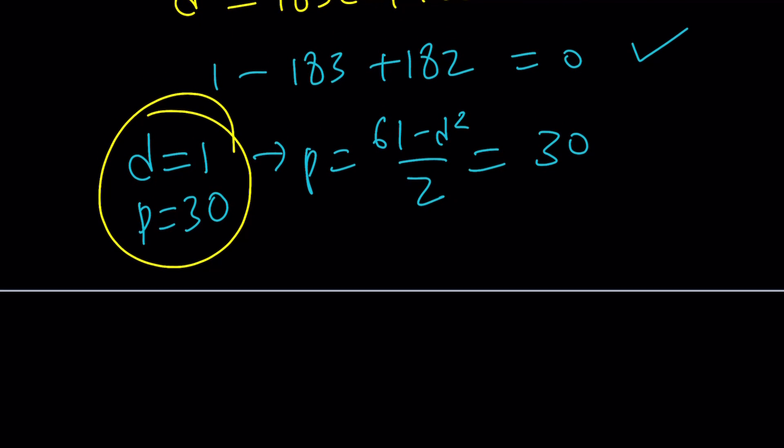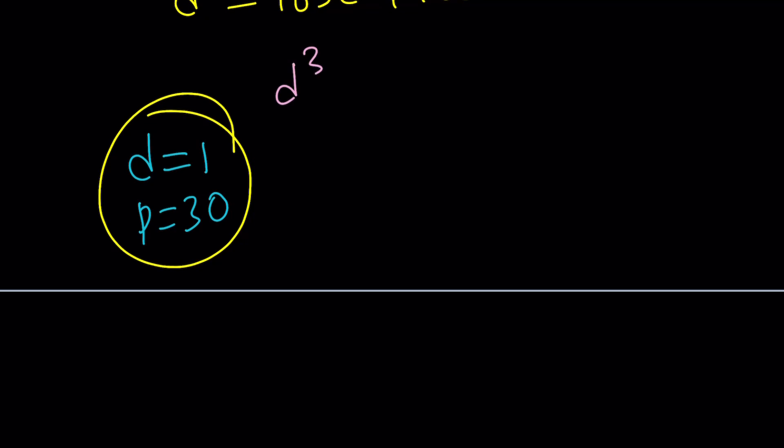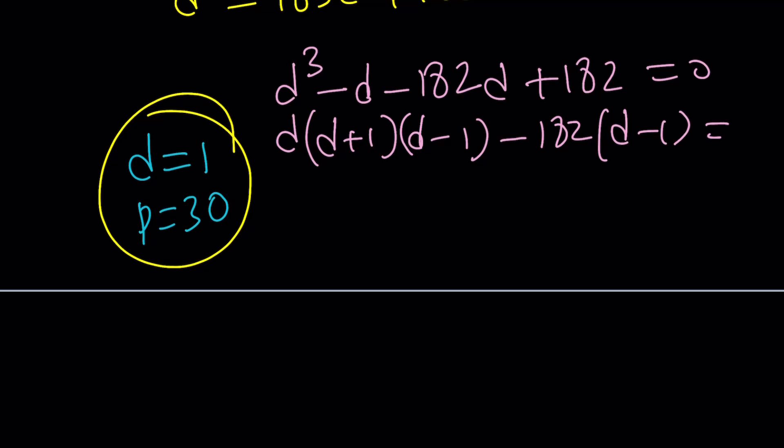You can basically do the following. You can kind of subtract d from here and then follow by 182d plus 182. And I kind of factor by grouping. d times d squared minus 1, which is d plus 1, times d minus 1, minus 182 times d minus 1. And now, d minus 1 is a common factor. Of course, because we know d equals 1 is a solution. And then this will be followed by d squared plus d minus 182. And yay! There are real solutions. How do I know that right away without checking? Because if a and c in a quadratic equation are opposite signs, then the discriminant is always greater than 0.